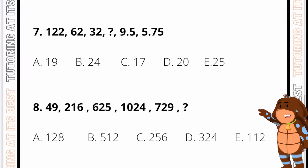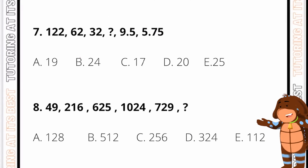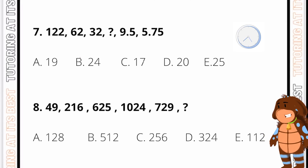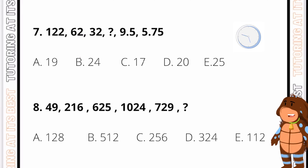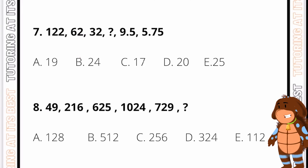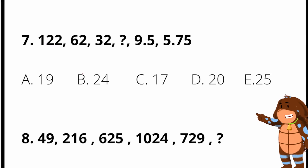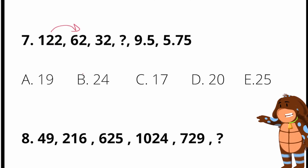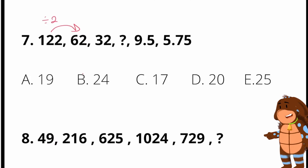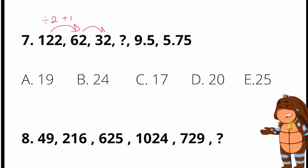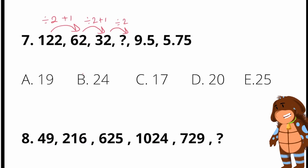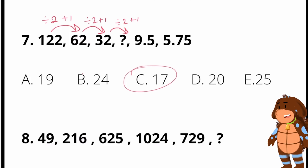Let's go for question seven. The numbers are going down, so we're either dividing or subtracting. What's common between 122 and 62? We can divide by two and then add one: 122 divided by two is 61, plus one is 62. This works throughout the entire sequence — divided by two plus one gives 32. And then 32 divided by two plus one is 17. So our answer is C.